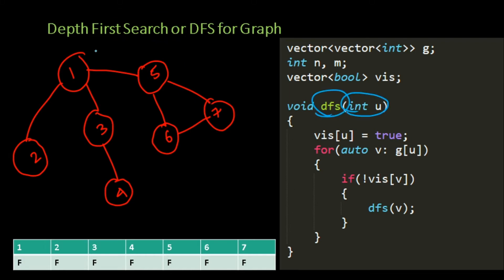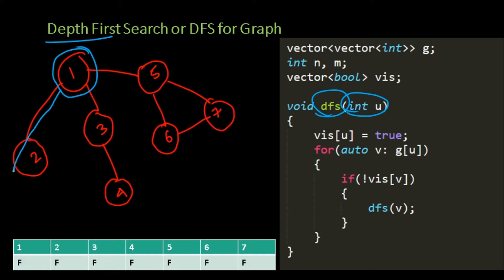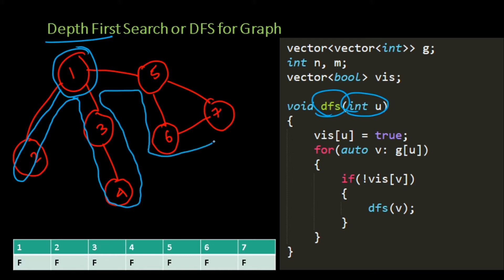Let us say we start our DFS from node 1. DFS is supposed to go depth first — it explores the complete depth of one branch, comes back, then explores the complete depth of the next branch, comes back, and again explores the complete depth of the next branch.